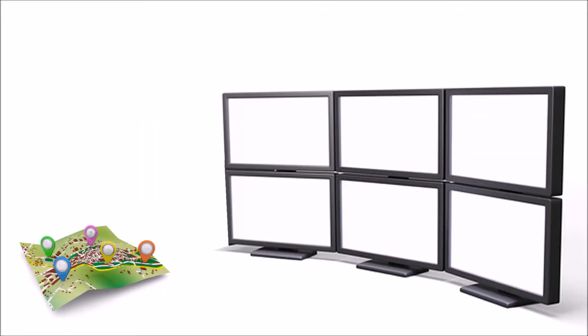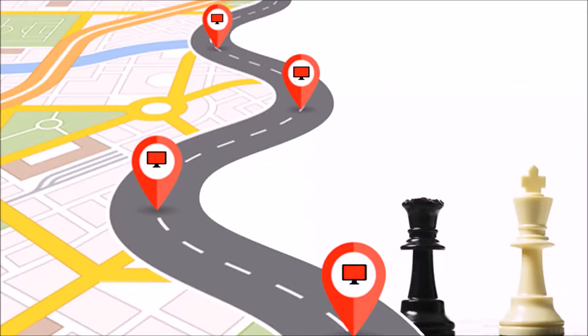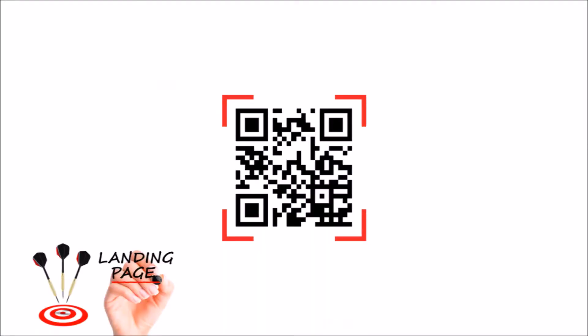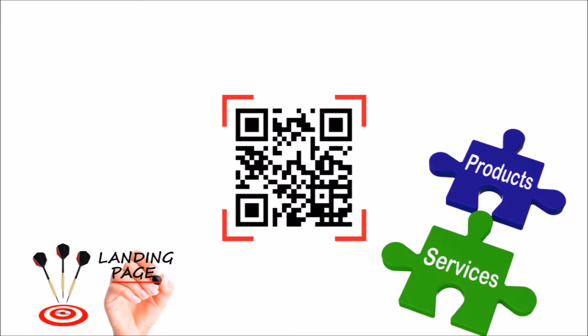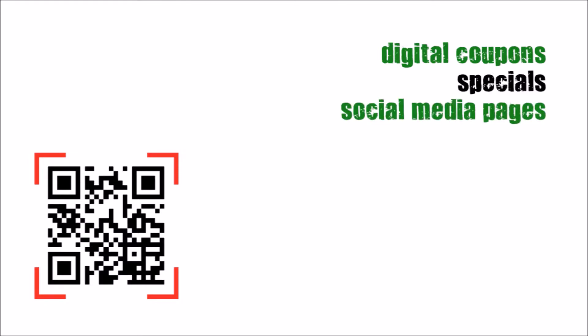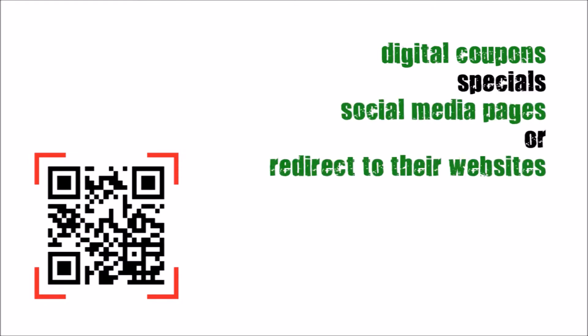When deploying digital signage advertising screens, make sure you use strategic incentives for your hosts wisely and effectively, like adding QR codes that redirect viewers to your host websites or provide more information about their products and services. These tools can also be used as an incentive for advertisers to purchase ad spots from you. QR codes can also be used by advertisers to display digital coupons, specials, social media pages, or redirect to their websites.